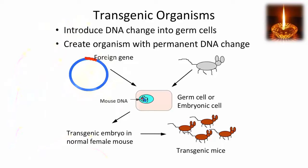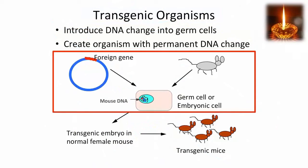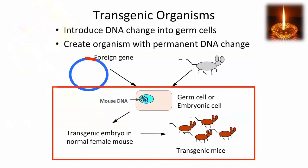Transgenic organisms are produced by introducing a DNA change into the germ cells, thereby creating a new organism with a permanent change in the DNA sequence. A foreign gene is introduced into the DNA, which is injected into the nucleus of a germ cell or an embryonic cell. The foreign gene is incorporated into the DNA of the germ or embryonic cell and is part of the DNA of all of the cells generated subsequently.